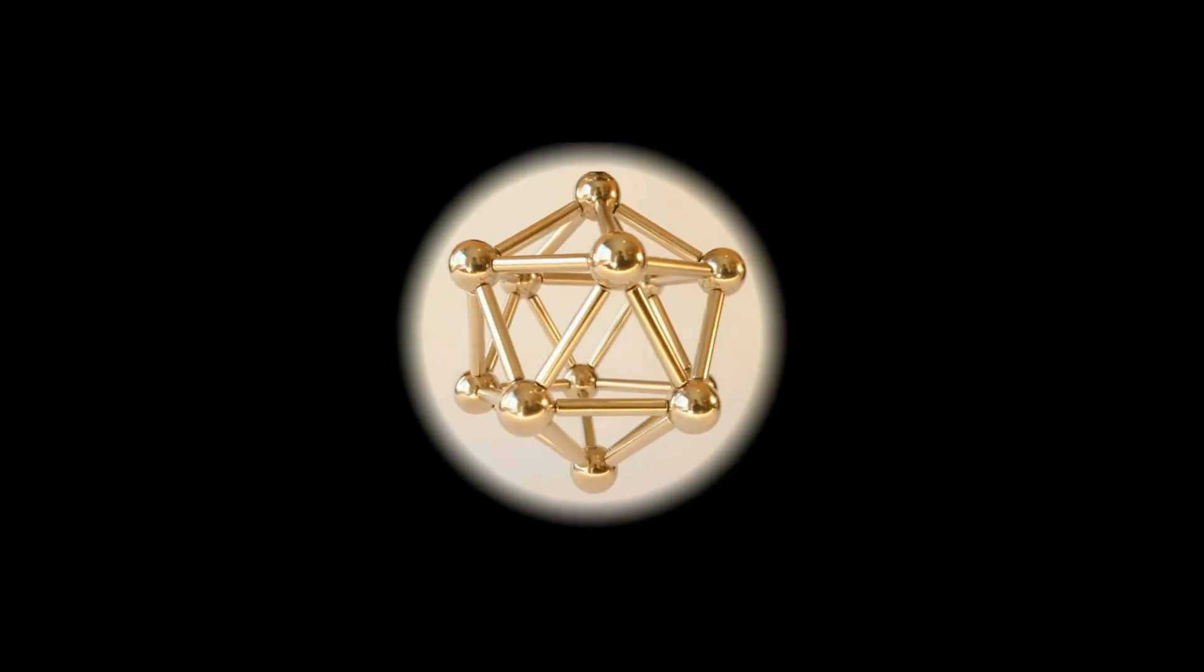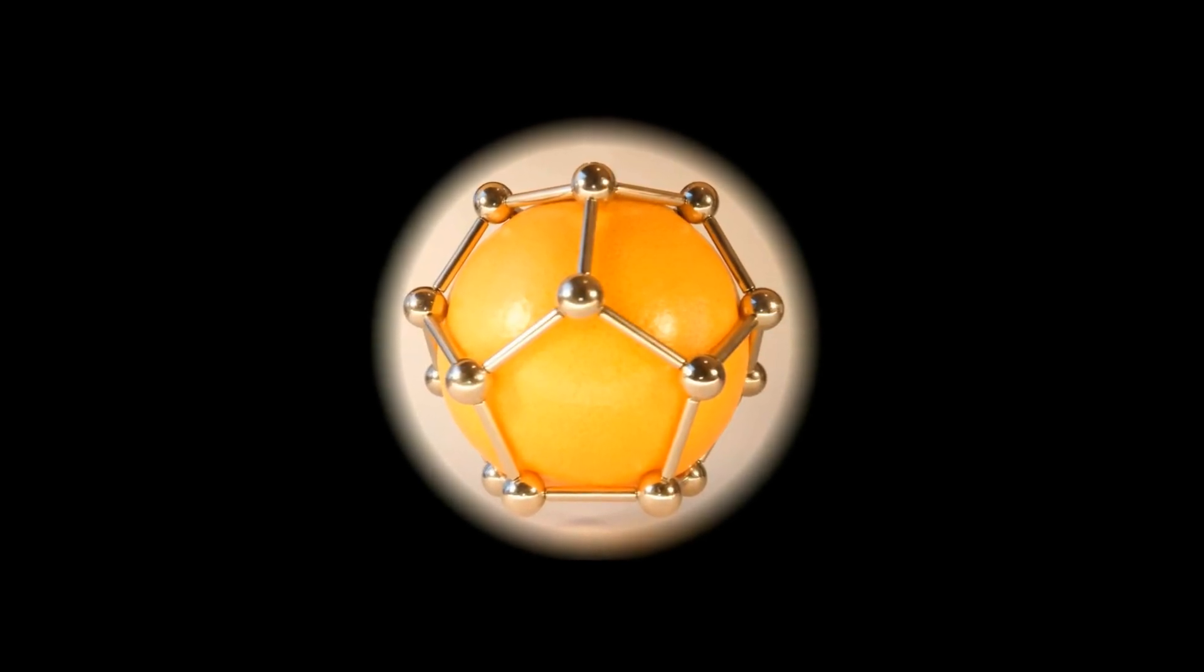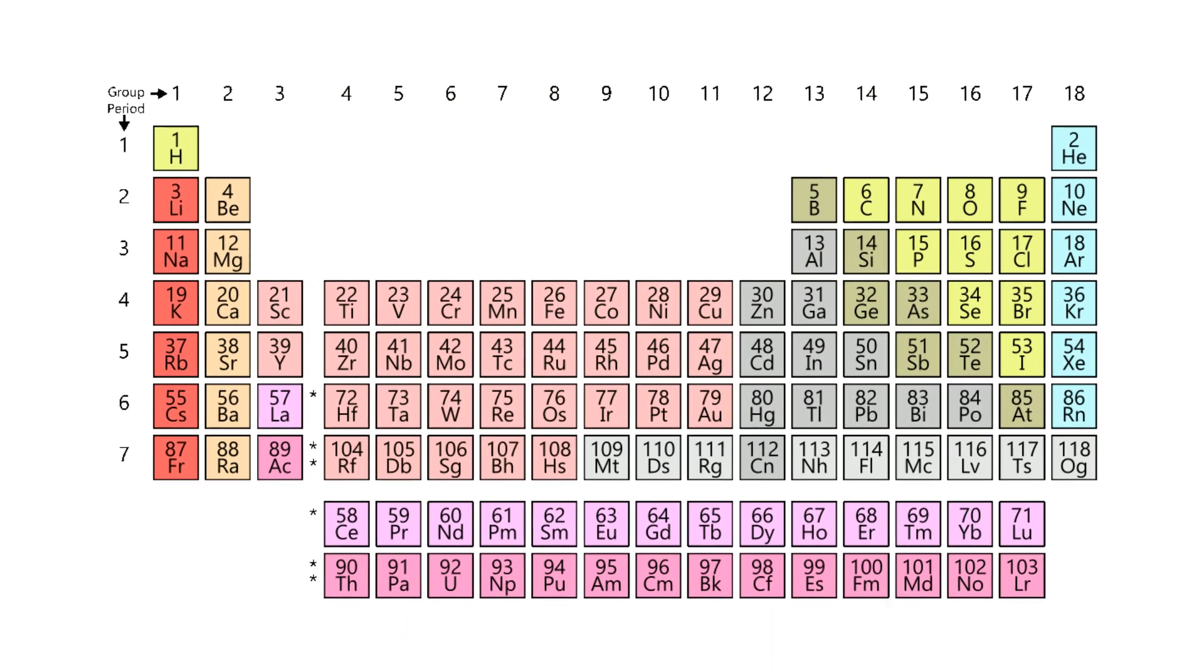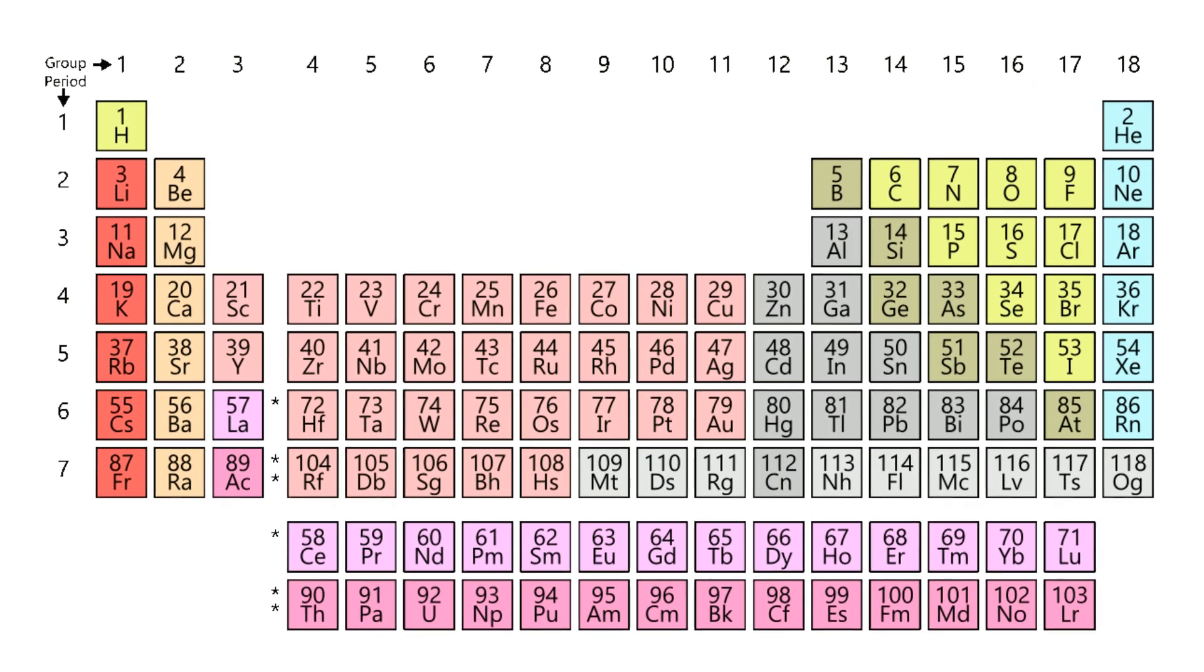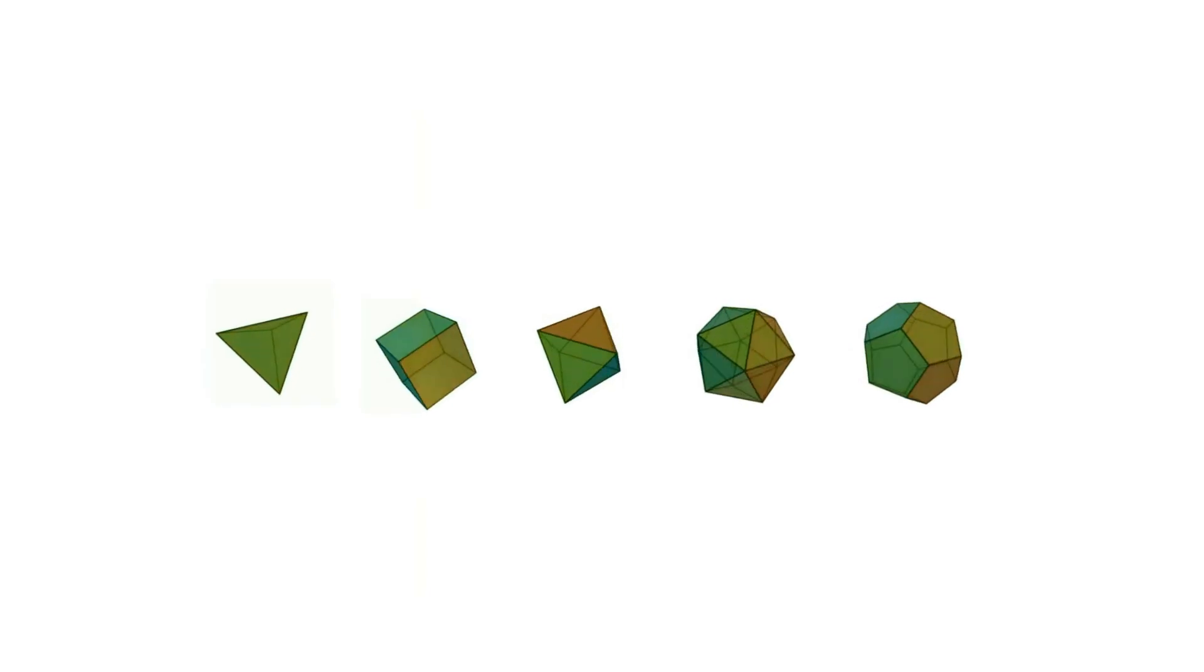A 3D model of any of the elements in the periodic table will show a crystalline structure at the atomic level made up of the platonic solid shapes.